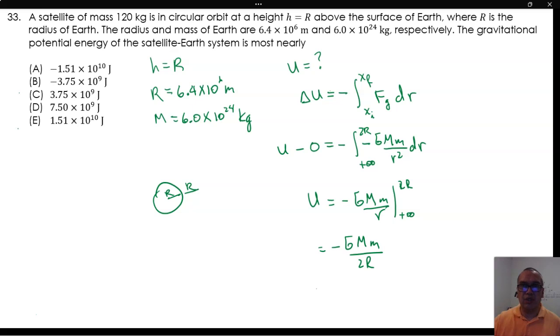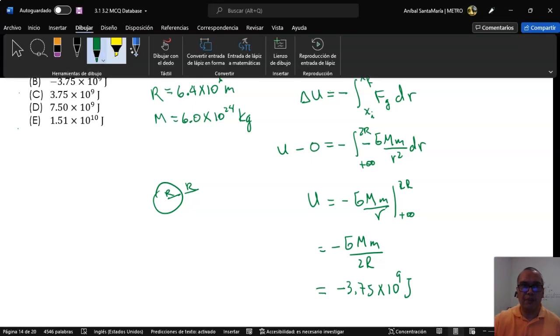we obtain a result of negative 3.75 times 10 to the 9th joules, which is option B.